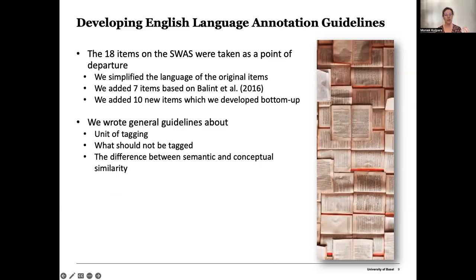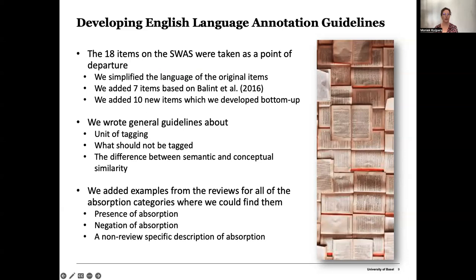We wrote general guidelines about units of tagging, what should not be tagged, and the differences between semantic and conceptual similarity between the categories in our guidelines and the segments in the reviews. We also added examples from the reviews for all of the absorption categories where we could find them. We tagged for both presence and negation of absorption, and also for non-review-specific descriptions — for example, when someone says 'usually I prefer books that transport me to another world,' even though it wasn't about the particular book being reviewed.